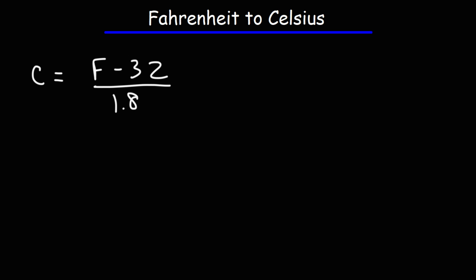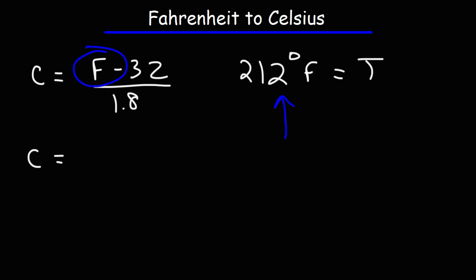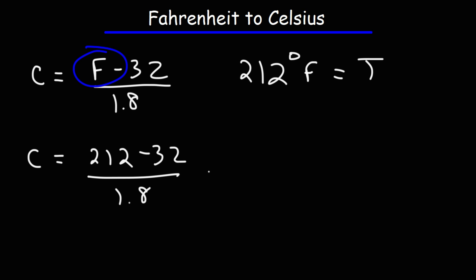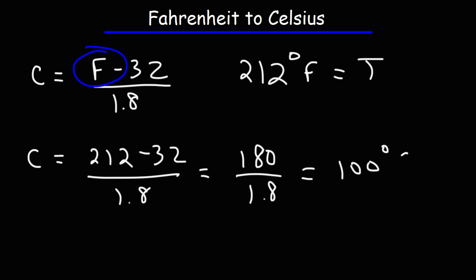So let's say the Fahrenheit temperature is 212 degrees — that's the boiling point of water. Let's go ahead and convert that to Celsius. All we need to do is replace F with this value, so it's going to be 212 minus 32, divided by 1.8. 212 minus 32 is 180, and 180 divided by 1.8 is 100. So that's the boiling point of water in Celsius.